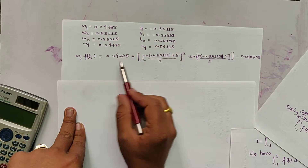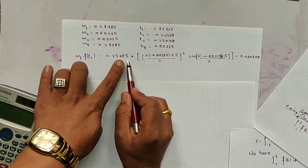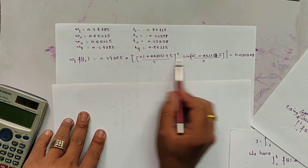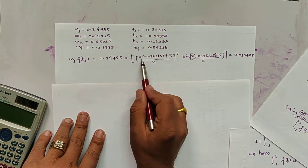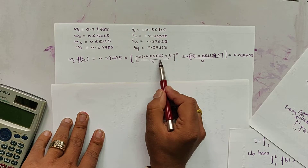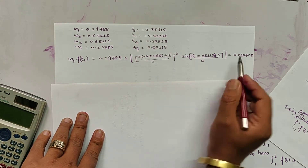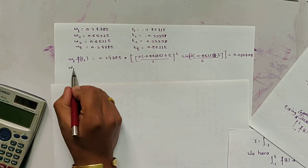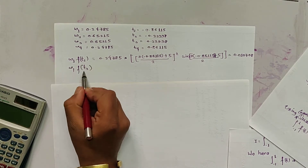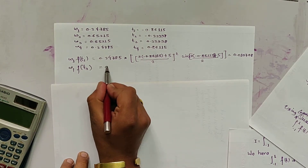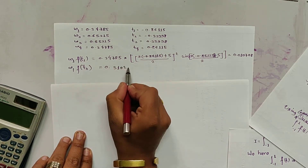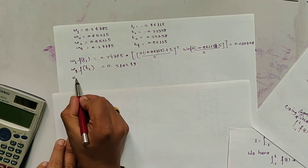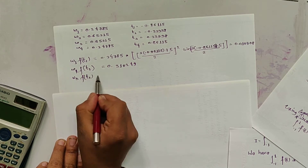Computing w1*f(t1): w1 = 0.347853 and the value of x at t1 is substituted as (3*t1 + 5)/2. Evaluating x^2 * sin(x) at this value gives w1*f(t1) = 0.010708. For w1*f(t2), the result is 0.310249.